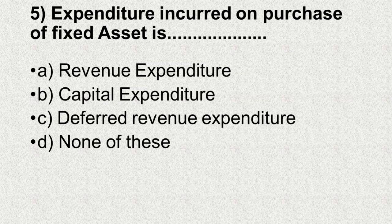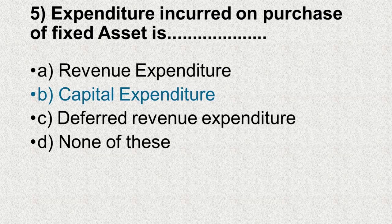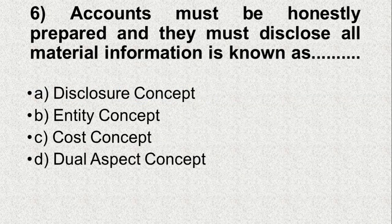Question number 5. Expenditure incurred on purchase of fixed asset is — Option A: Revenue expenditure, B: Capital expenditure, C: Deferred revenue expenditure, D: None of these. And the correct answer is B, Capital expenditure.